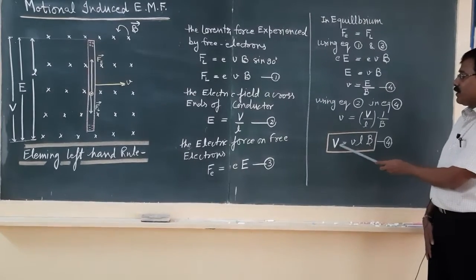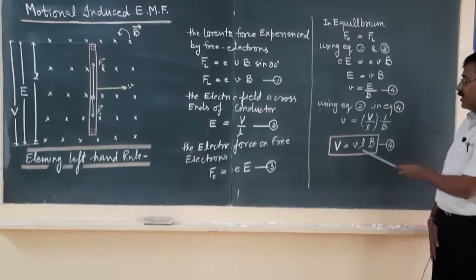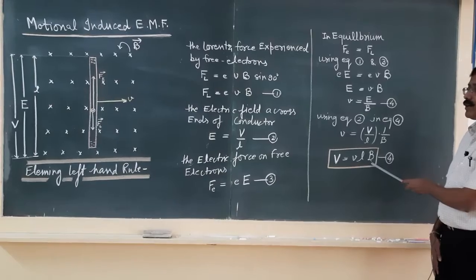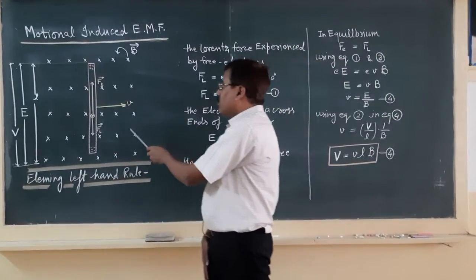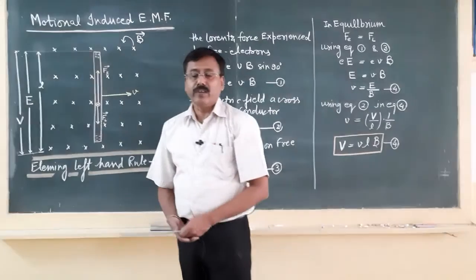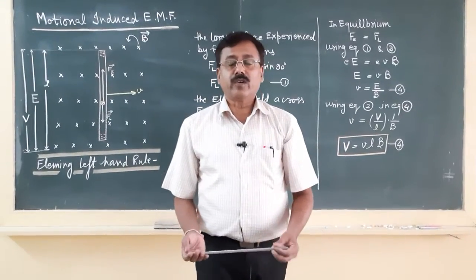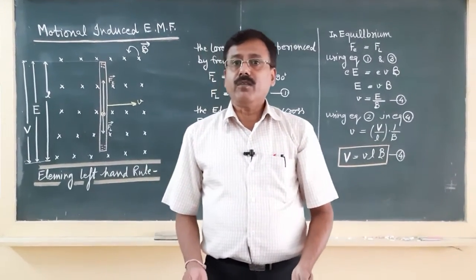It means the motional EMF is the product of velocity, length of conductor, and magnetic field, provided the conductor is moving perpendicular with respect to the magnetic field. So, in this way you can use this formula for many purposes.